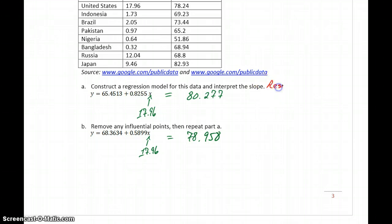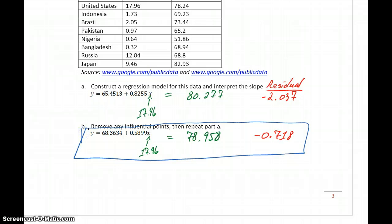So, what we want to do is calculate the residuals in both cases. So, for the United States, the actual value is 78.24. So, 78.24 minus our predicted value would give us a residual of negative 2.037. Our known value of 78.24 minus our predicted value here would give us a difference of negative 0.718. So, in this case, it's our second model that gives us the more accurate prediction because that residual is smaller, meaning our predicted value is much closer to the observed value.